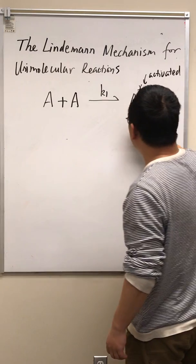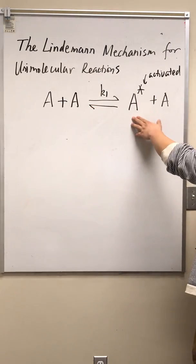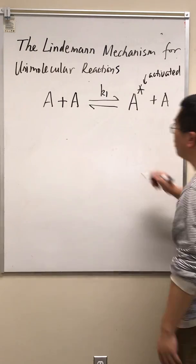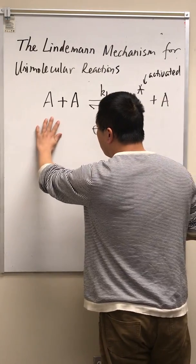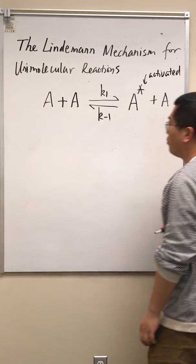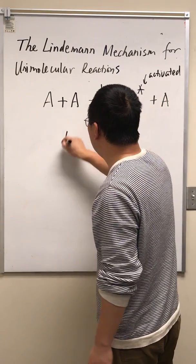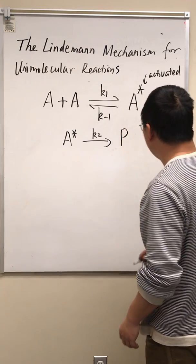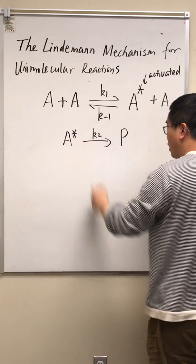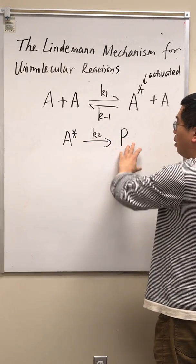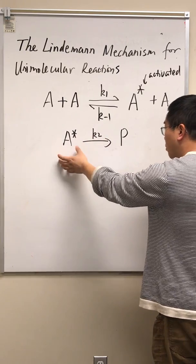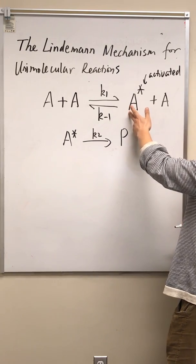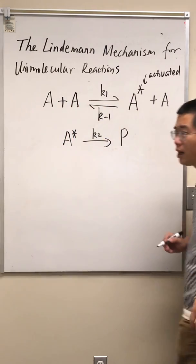Again, this activated A may collide with another A. It may not be the same A, but it can collide with another A to lose energy and then form two deactivated A's. Well, this A* can also go through another channel here to form the product. Again, this is activated. This A star has enough energy to form the product. But before it can be converted to the product, it's possible for this A star to collide with another A and pass the additional energy to the other A. And then you have two deactivated A molecules.